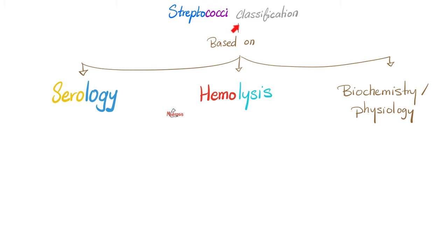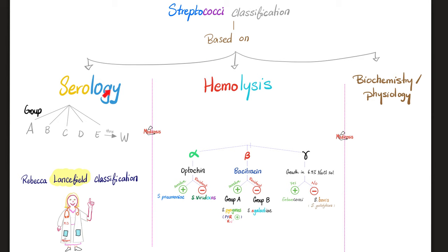We have three modes of classification for streptococci. First, based on serology — the Rebecca Lansfield classification — which groups them into Group A, B, C, D, E, F, G, all the way to Group W. Second, based on hemolysis: alpha, beta, or gamma hemolytic. Third, based on biochemical and physiological tests, which depend on the physiological properties of the streptococci.